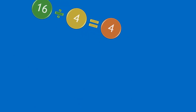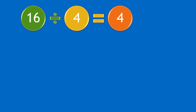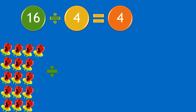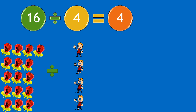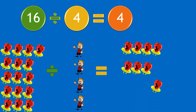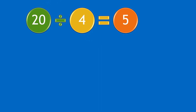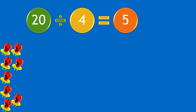Moving on to our next question: sixteen divided by four equals four. If you have sixteen ring pops and divide them by four boys, each boy will receive four ring pops.